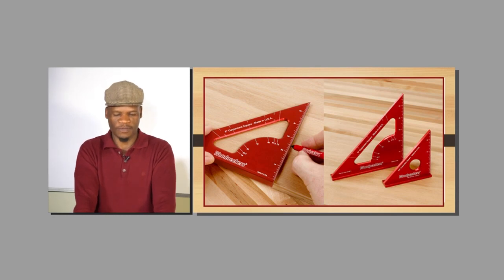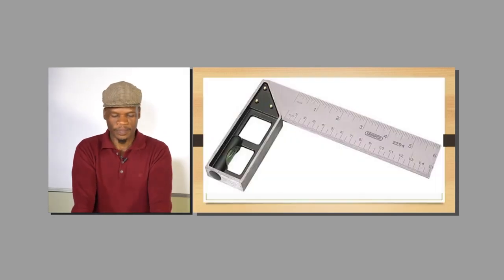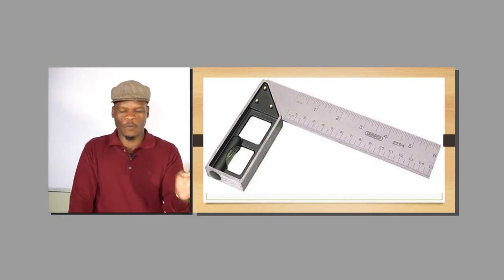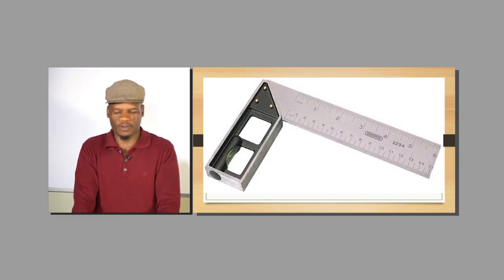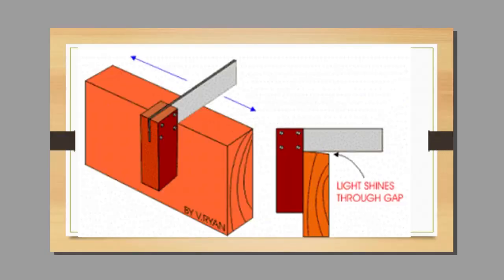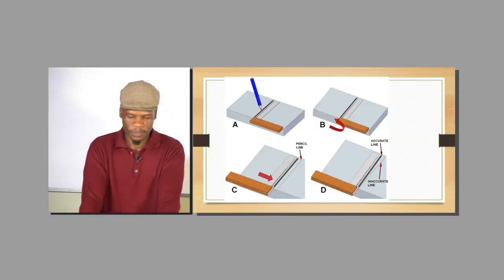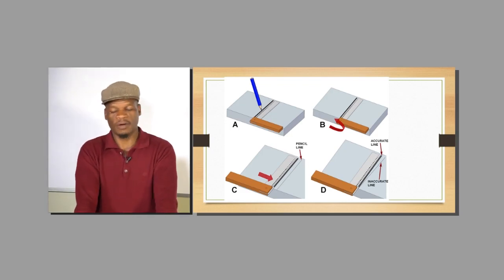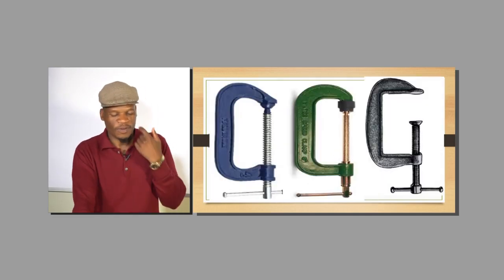Then you have got your tri square, which is normally used to test if the material you have cut is square according to the blade used to cut it, or if it is a little bit skewed. You can use it to draw vertical or horizontal lines depending on the material you are working on.